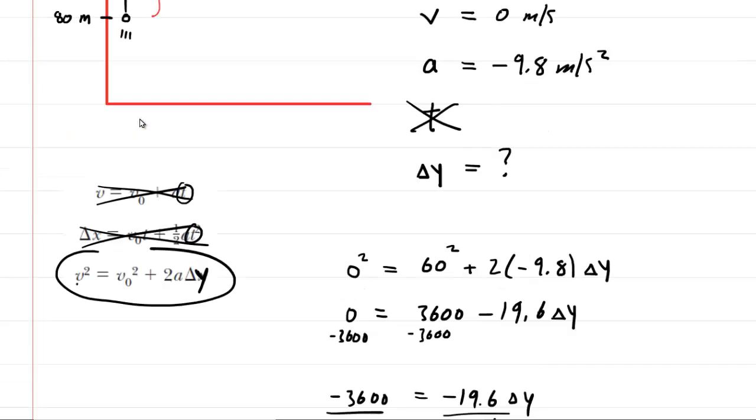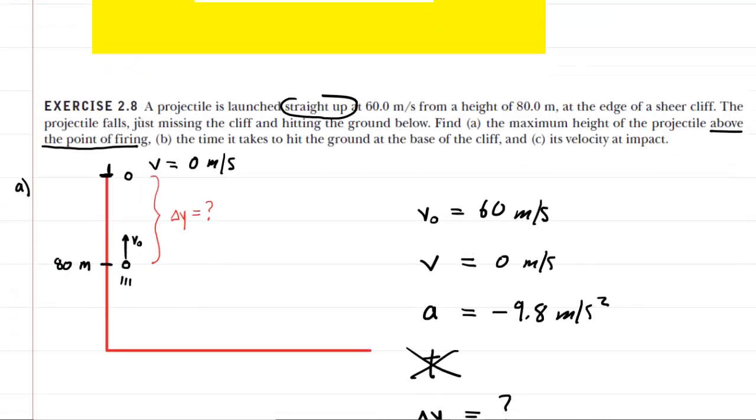We can move on to the other parts. And they actually kind of tie together because we need to find the time that it takes to hit the ground. But then we also need to find the velocity at impact once the projectile hits the ground. And it turns out it's actually a little bit easier to do part C first. If we do part B first, we end up needing to do the quadratic formula. And who wants to do that? So we're going to do part C first. We're going to find the final velocity when the projectile reaches the ground.